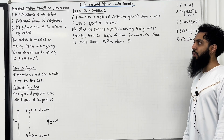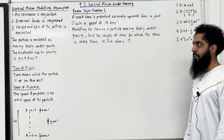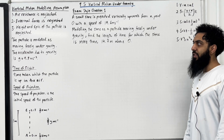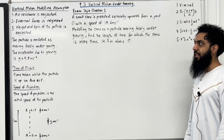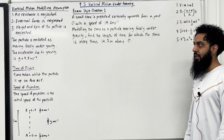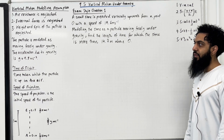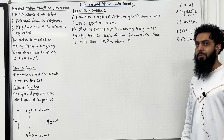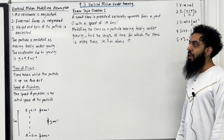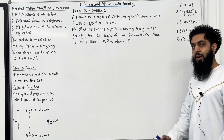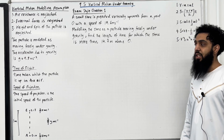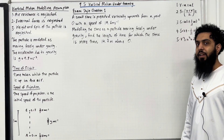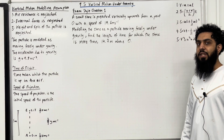We are going to start off with vertical motion modelling assumptions. Number 1, air resistance is neglected. Number 2, external forces are neglected. And number 3, weight and spin of the particle is neglected. The particle is modelled as moving freely under gravity. The acceleration due to gravity is represented by g, which is equal to 9.8 metres per second per second in A-Level Mechanics. Gravity acts vertically downwards, hence g also acts vertically downwards.